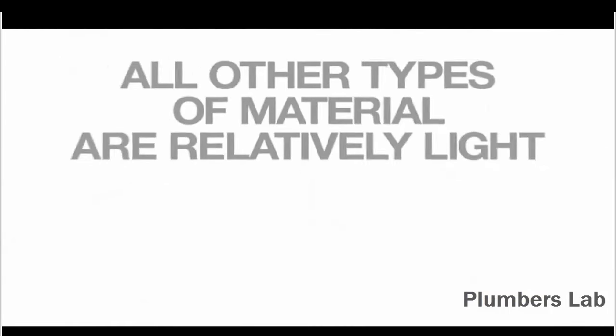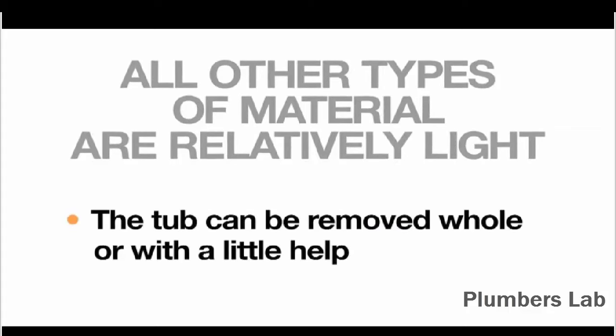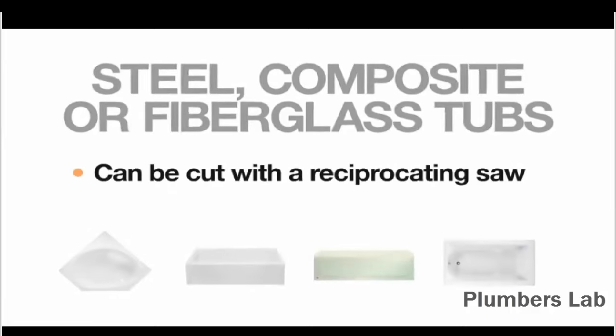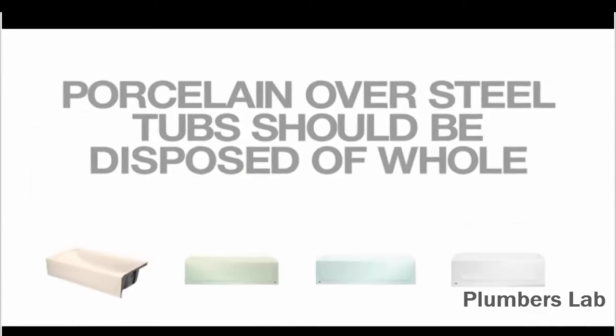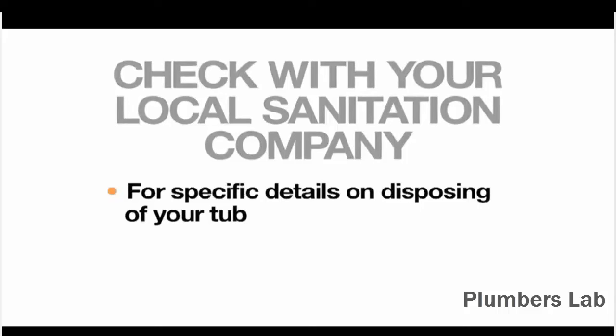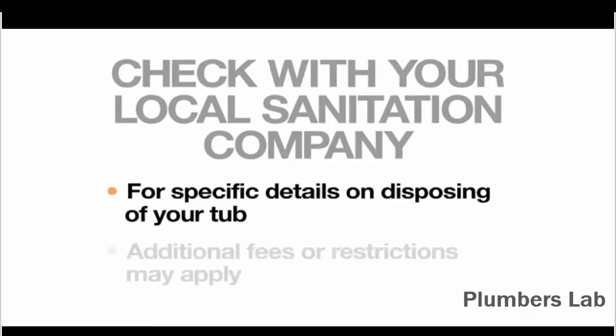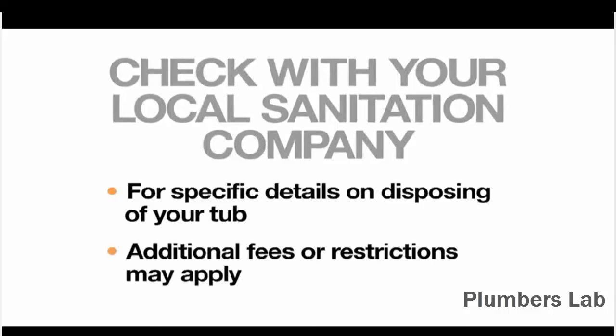All other types of material are relatively light, and the tub can be removed whole with a little help. Steel, composite, or fiberglass tubs can be cut up with a reciprocating saw. Porcelain over steel tubs should be disposed of whole. Check with your local sanitation company for specific details on disposing of your tub. Additional fees or restrictions may be involved.